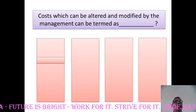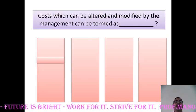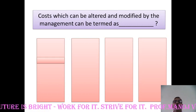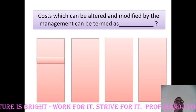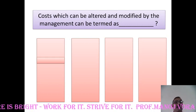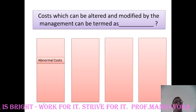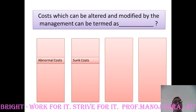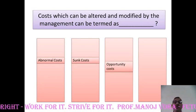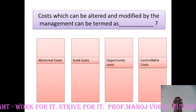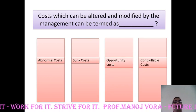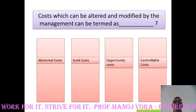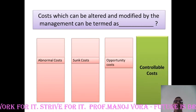Your next question: cost which can be altered and modified by the management can be termed as — your options are abnormal costs, sunk costs, opportunity costs, or controllable cost. Your right answer is controllable cost.